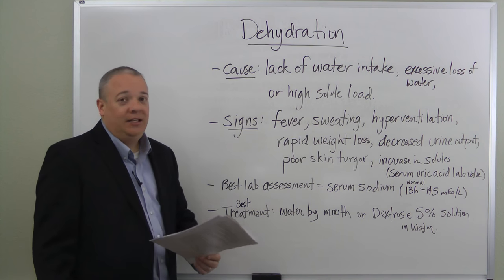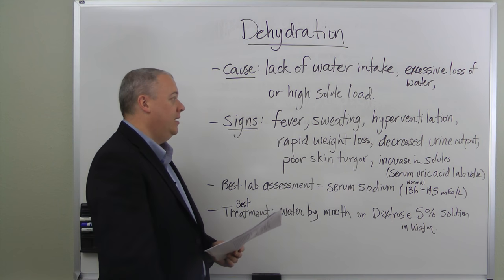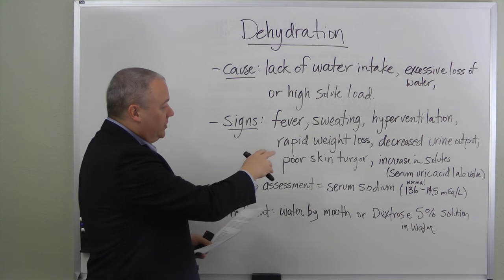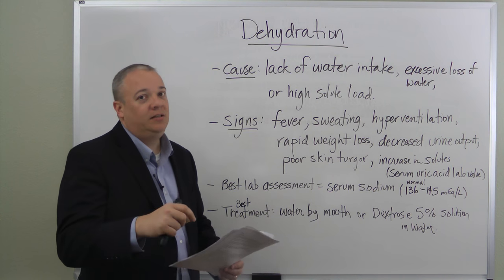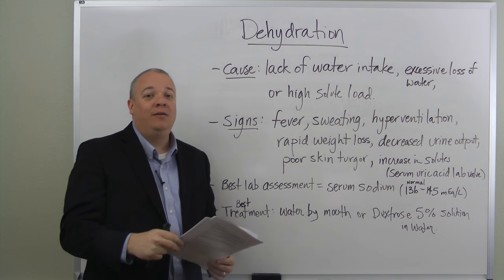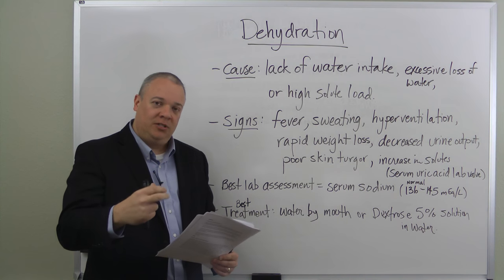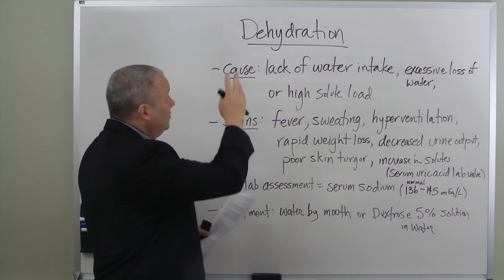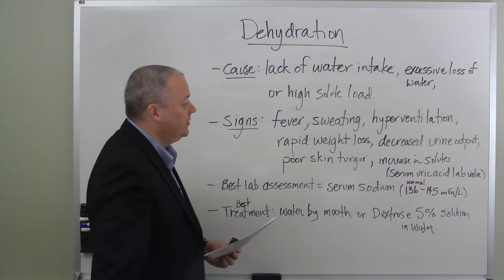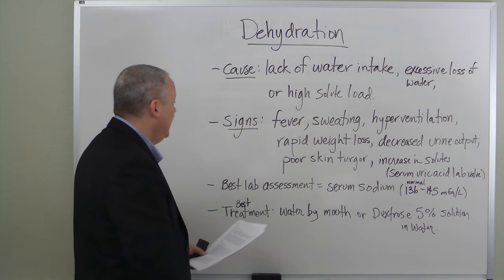Signs that someone has dehydration include fever, sweating, hyperventilation, rapid weight loss, decreased urine output, and poor skin turgor. Skin turgor is tested by pulling up the skin on the back of the hand — if it snaps back rapidly, turgor is good; if it goes back slowly, that indicates poor skin turgor, which is a sign of dehydration. Increased solutes — things like elevated serum uric acid lab values — are also signs.